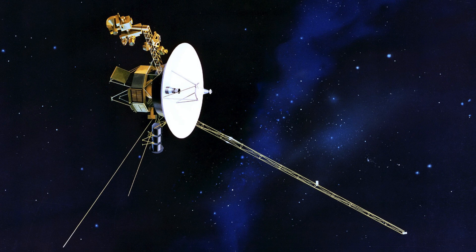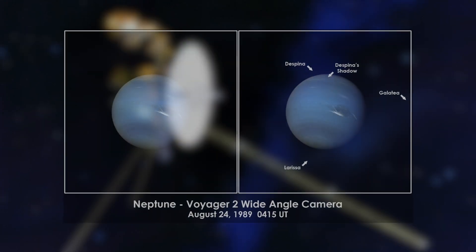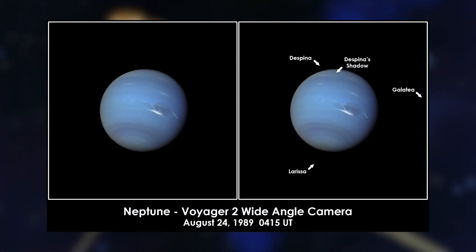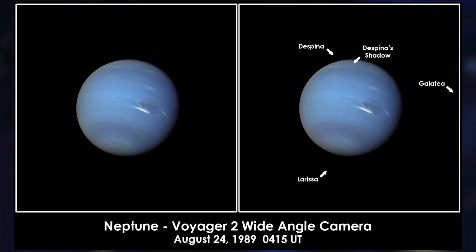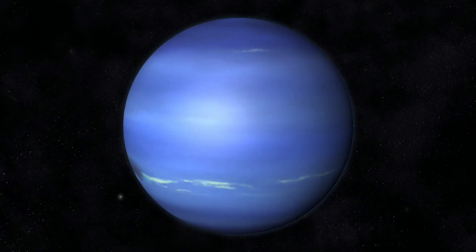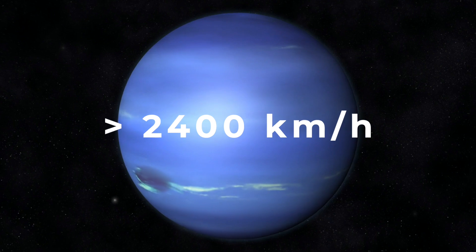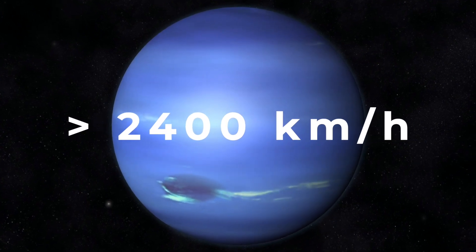Voyager 2 succeeded in taking images of Neptune for the first time, while simultaneously detecting six previously unknown moons in the direct vicinity of the planet. Viewing the storms that whipped across the surface of Neptune caused great astonishment among experts. The strong winds thrashed across the ice giant with a rapid speed of more than 2,400 kmph.